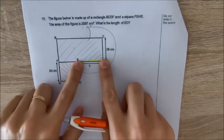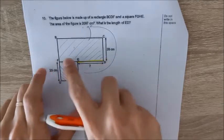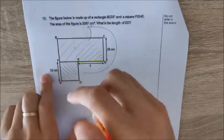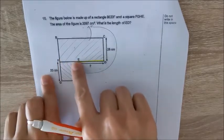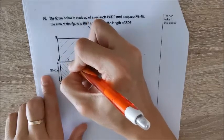First of all, I want to find ED. Do you realize that if I can find FD, which is the length of this rectangle, I just need to minus off the length of the square, then I can find ED. Okay, because this side is 23 cm and this is also 23 cm.